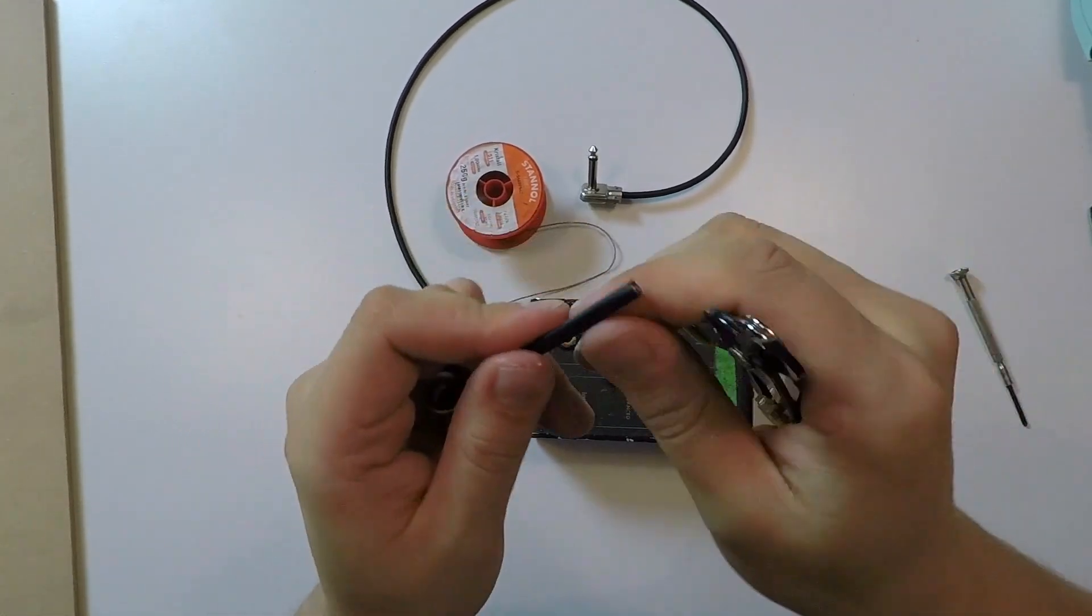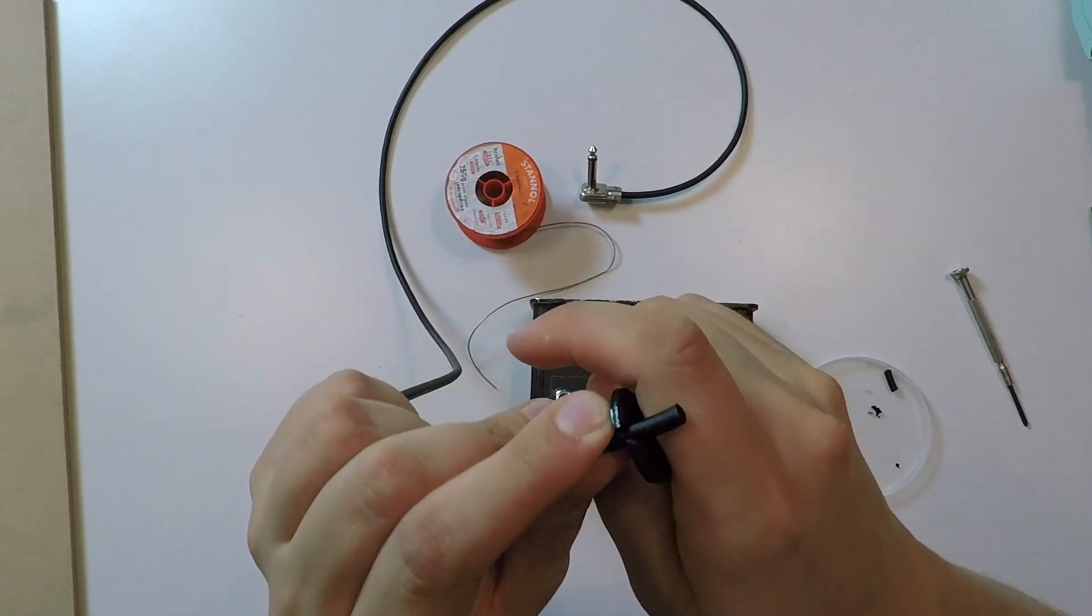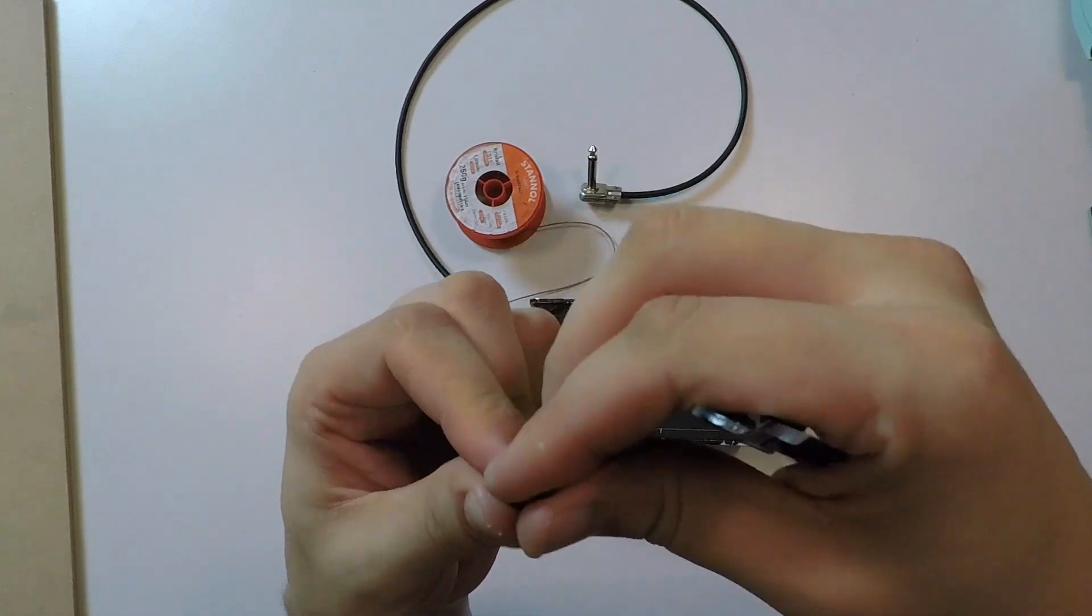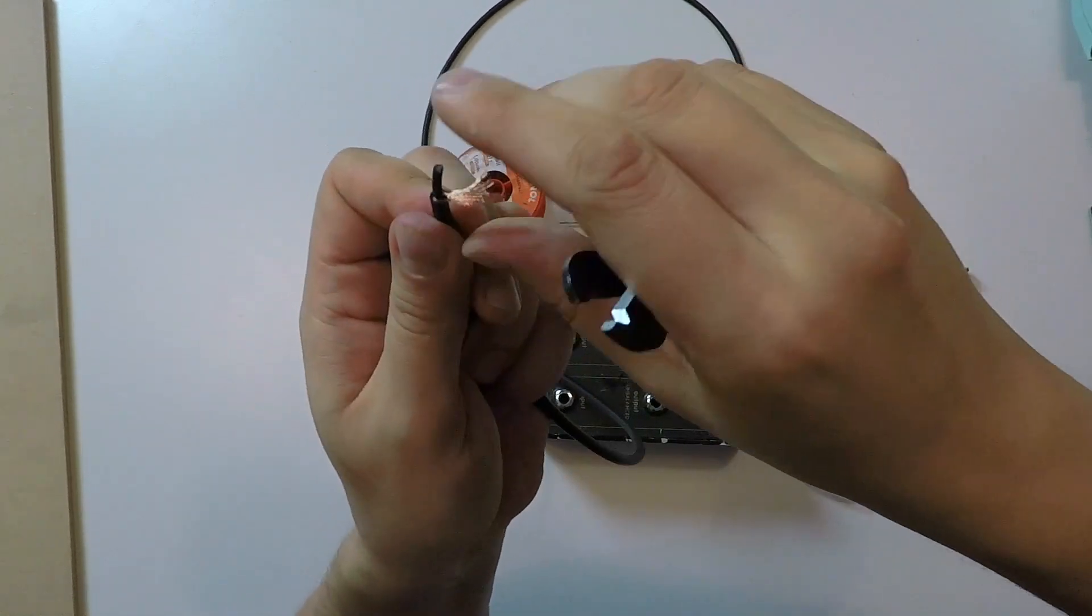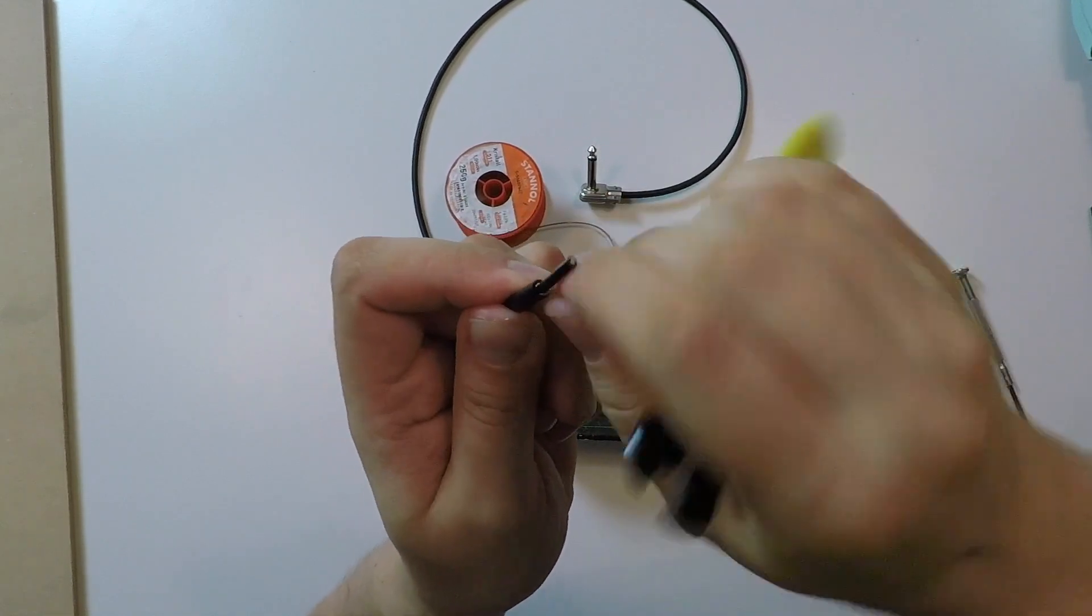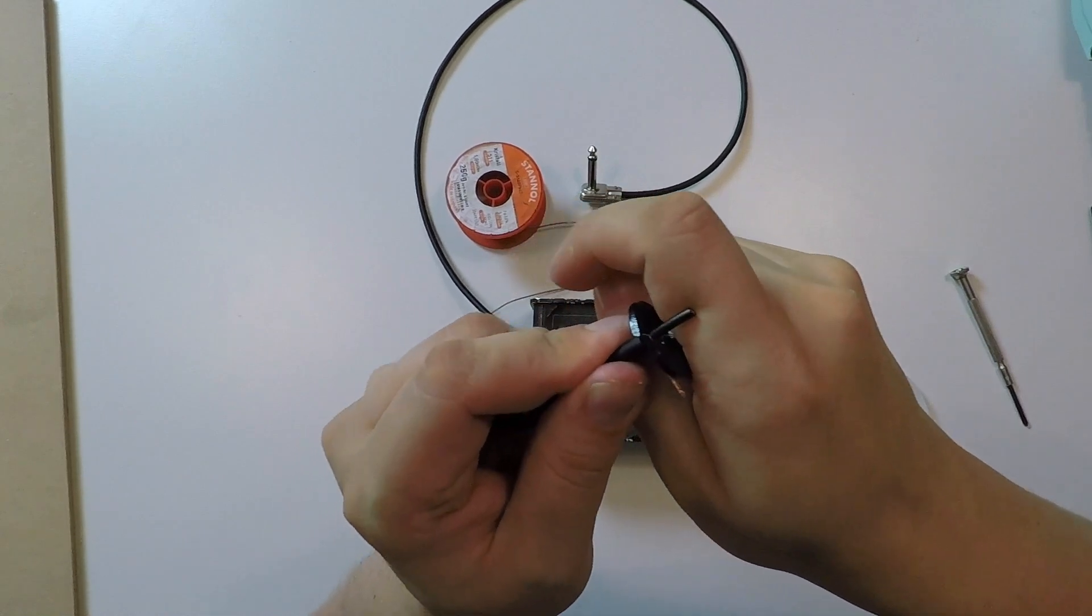Then the same thing as with the angled connector, you need to strip about one centimeter off. Here again, do a little bundle of the ground wires so it's easier to solder later on.